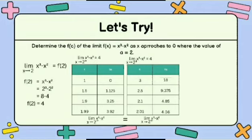Since we are finding the limit of the function X cubed minus X squared from the left, our X values will be 1, 1.5, 1.9, and 1.99. To find our f of X, we substitute all the values of X into the given equation, and we will have 0, 1.125, 3.25, and 3.92. Therefore, the limit of X cubed minus X squared as X approaches 2 from the left is equal to positive 4.